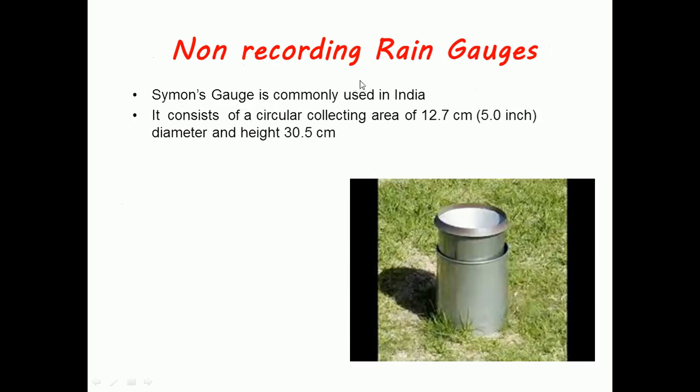Talking about non-recording rain gauges, Simon's gauge is commonly used in India. It consists of a circular collecting area of 12.7 centimeters (5 inch diameter) and height 30.5 centimeters.